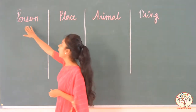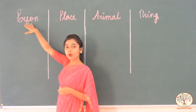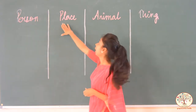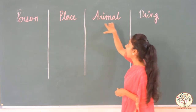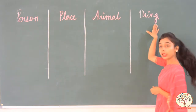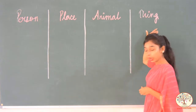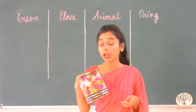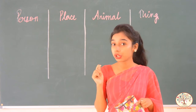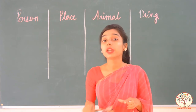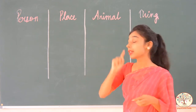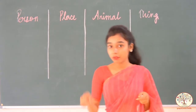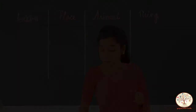We have four heads, as you can see: person, place, animal, and thing. Okay? And I have a Pindara box in my hand. I will pick out a chit and read that word and write it under the correct head. Okay? So shall we start?